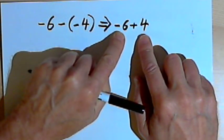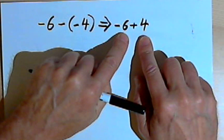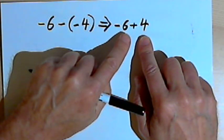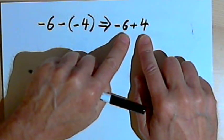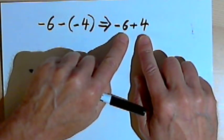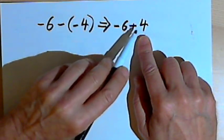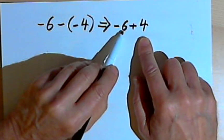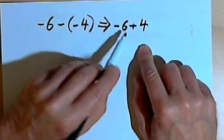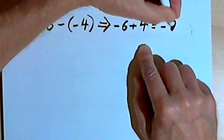The signs are different, so I'll find the difference of the absolute values of those two numbers. That means I'm looking for the difference between 6 and 4. The difference is 2. I need to know what sign I'll use, and the sign is going to be the sign of the larger of the two absolute values. The larger of those numbers is 6, so that means I've got negative 2.